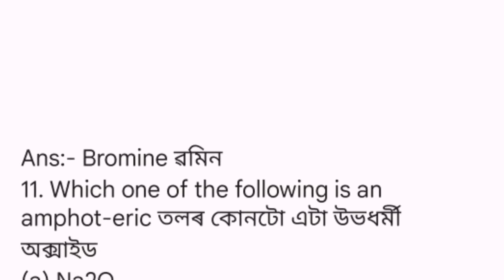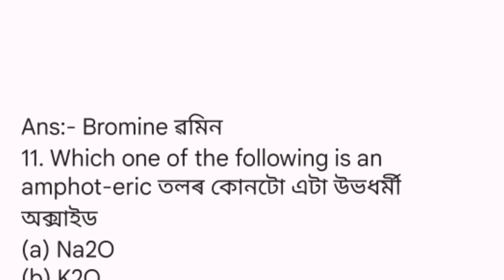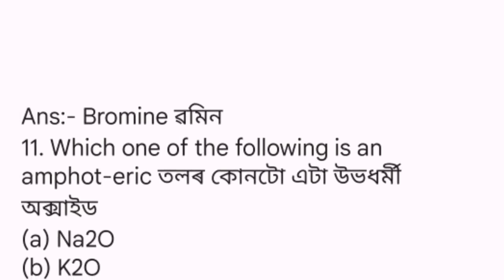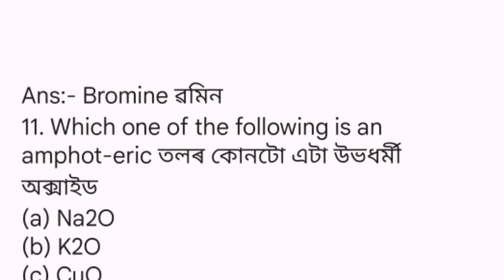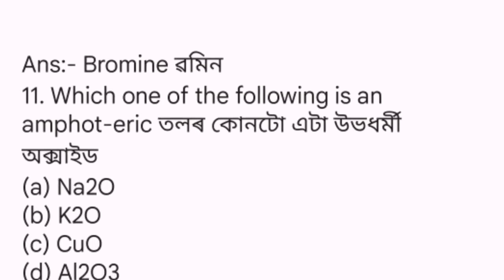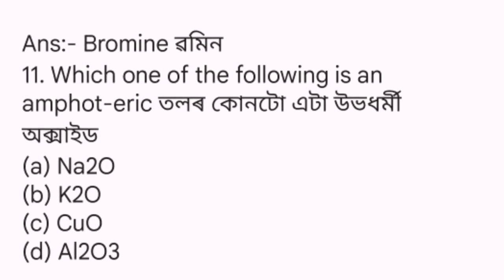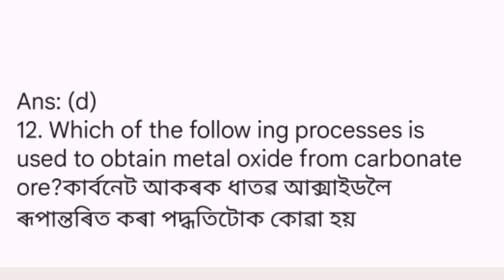Eleventh question: Which of the following is an amphoteric oxide? The options are Na₂O, K₂O, CuO, Al₂O₃. The answer is option D, Al₂O₃.